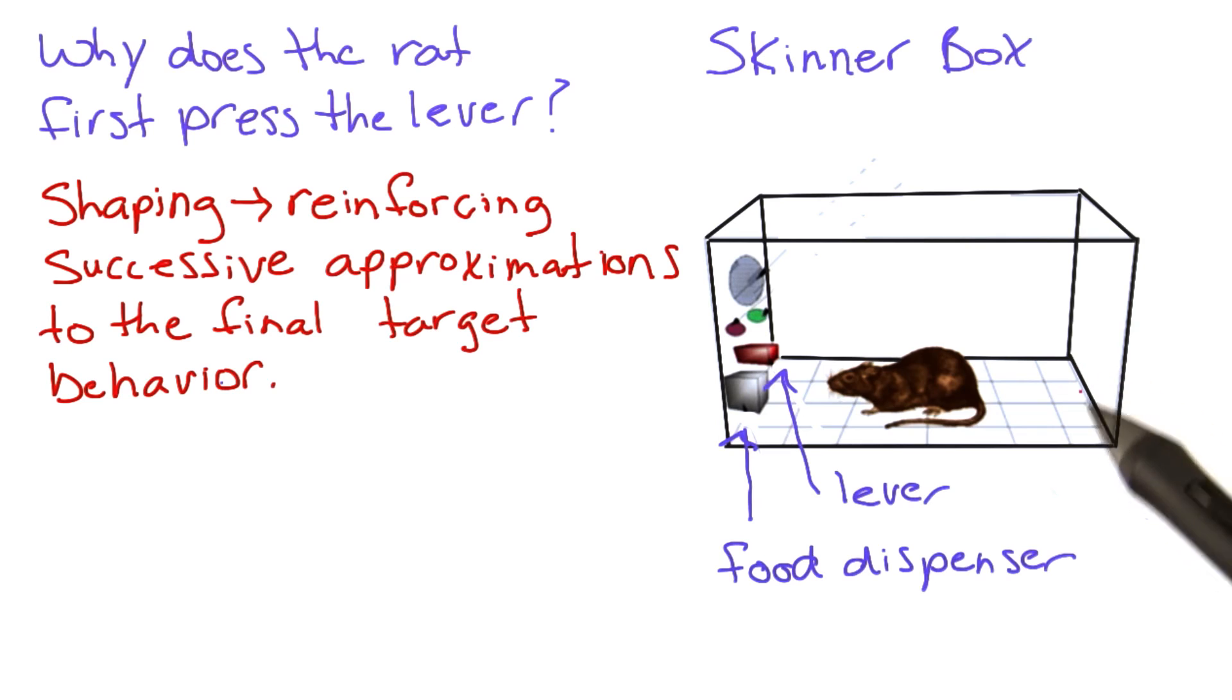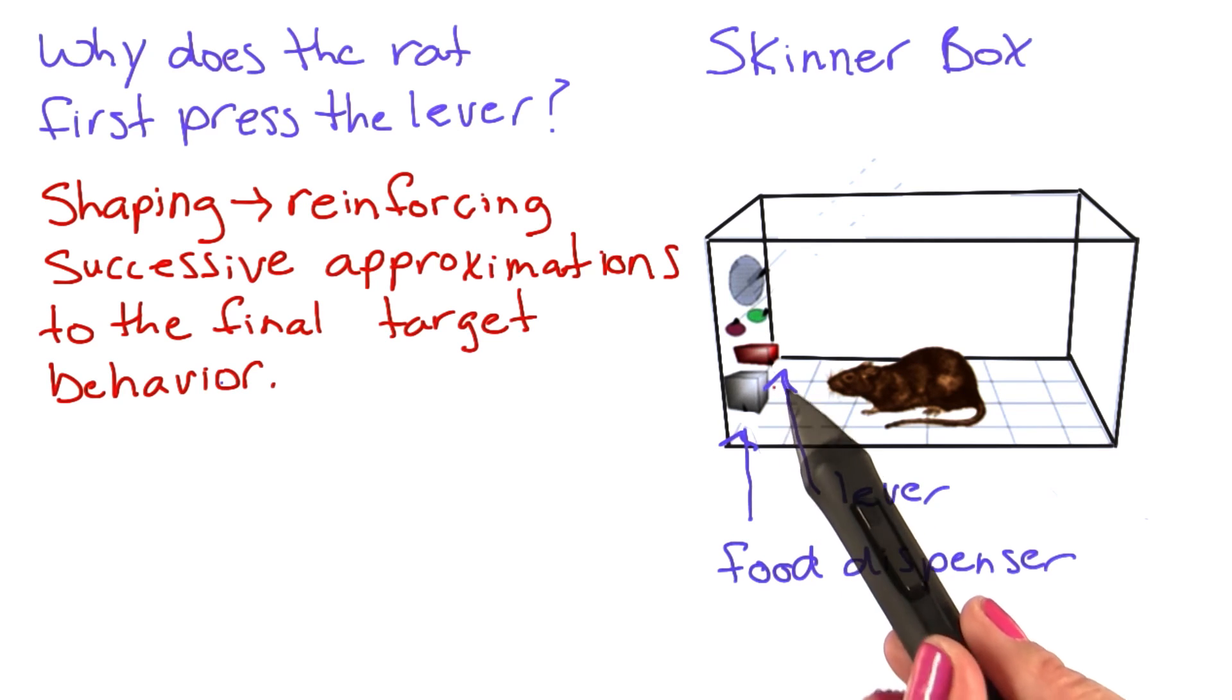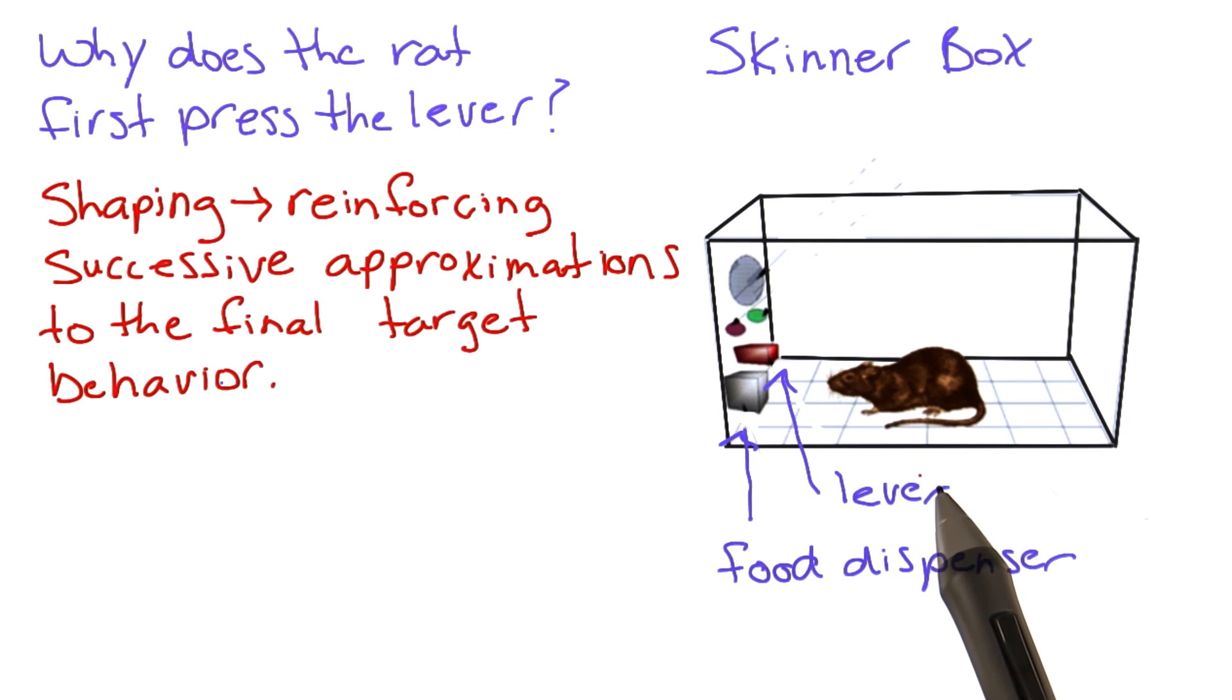If the rat were standing over here in the corner, I wouldn't deliver a food pellet. However, if the rat started to approach the lever, I could deliver a food pellet. Eventually, you reinforce those behaviors that are closest to the final one. Shaping is important for many of our operant conditioning behaviors.